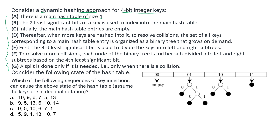There is no standard hash function; instead, they are using a custom-built hash function. The two least significant bits of a key are used to index into the main hash table. Our integers are 4-bit — let us call them i3, i2, i1, i0 — so i1 and i0 will be used for hashing. The hash table has indices 00, 01, 10, and 11, corresponding to the values of i1 and i0.